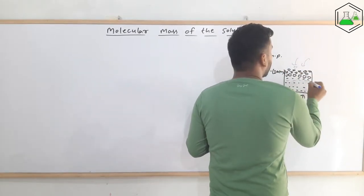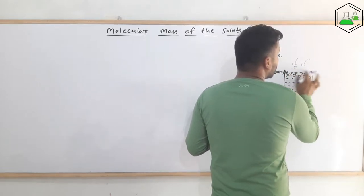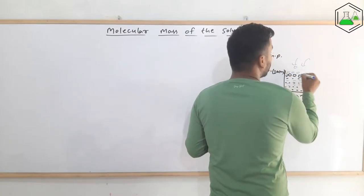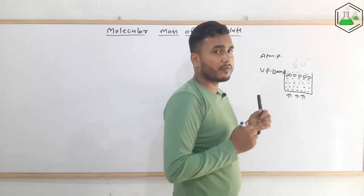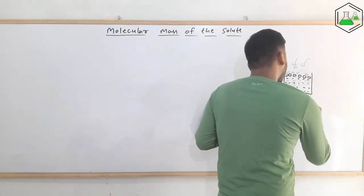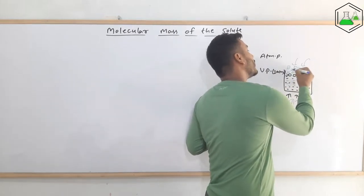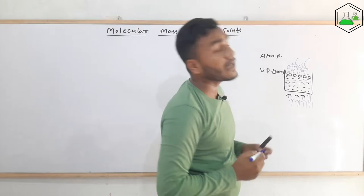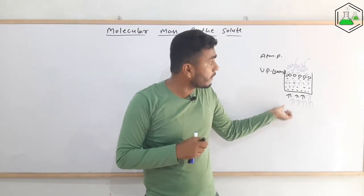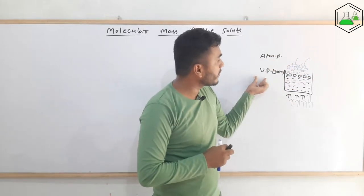But what if we put some non-volatile solute in it? The number of vapor molecules will decrease. To make it boil, what do we need to do? We need to heat it more — we need to provide more heat and raise the temperature of this liquid. Only then will the number of vapor molecules be sufficient to make the vapor pressure equal to the atmospheric pressure.